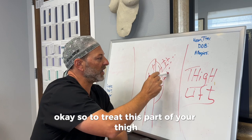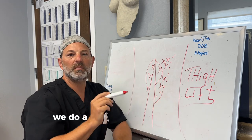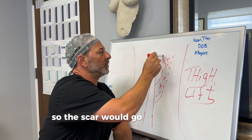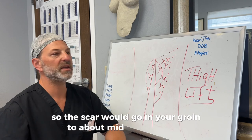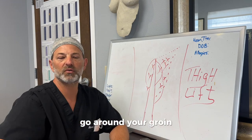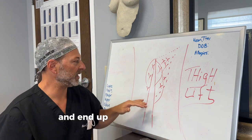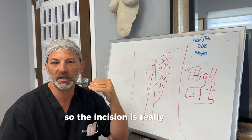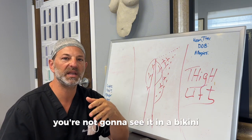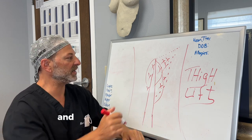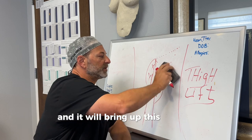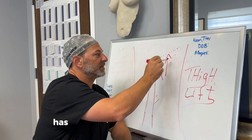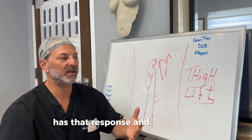So to treat this part of your thigh, we do a medial thigh lift. The scar would go in your groin to about mid anterior thigh, go around your groin and end up on the backside of where your gluteal crease is. So the incision is really well hidden. You're not going to see it in a bikini. You're not going to see it in your panties and it will bring up this part of your thigh.